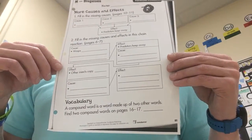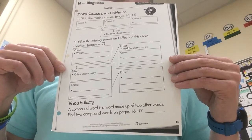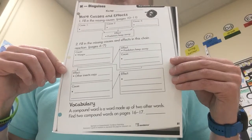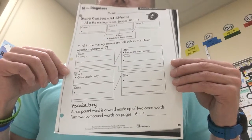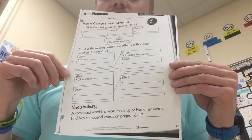And then down on the bottom, vocabulary, it says a compound word is a word made up of two other words. Find two compound words on pages 16 and 17. So compound words are just that. I have four words written down. Only two of those are compound words.